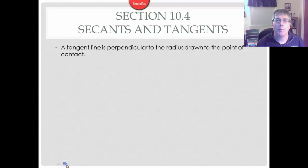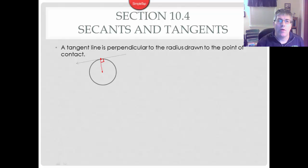A tangent line is perpendicular to the radius drawn to the point of contact. Here's an example of a tangent line with our tangent point. If we draw a line from the center of a circle to that point of tangency, it will always form a right angle — so it's always perpendicular. A radius is perpendicular to a tangent line at the point of contact. This is a very important concept. We're going to be drawing radii to points of contact because we want that right angle.